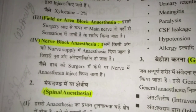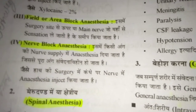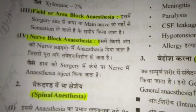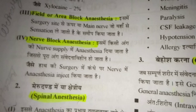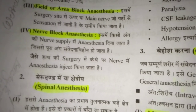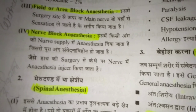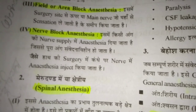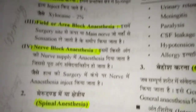Field or area block anesthesia involves blocking the surgery site or the main nerve supplying sensation to the area. Nerve block anesthesia blocks the entire nerve supply to a whole organ or region.